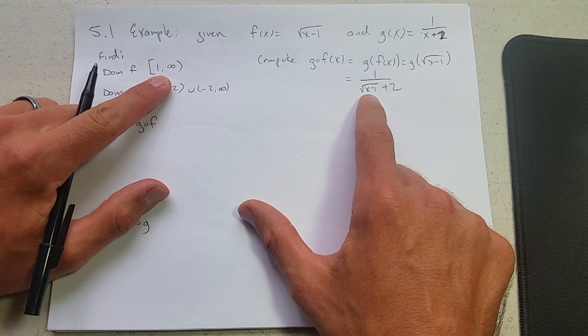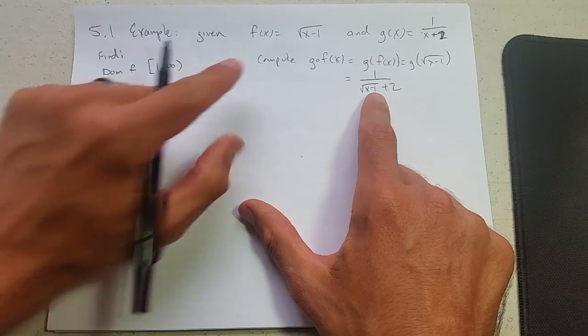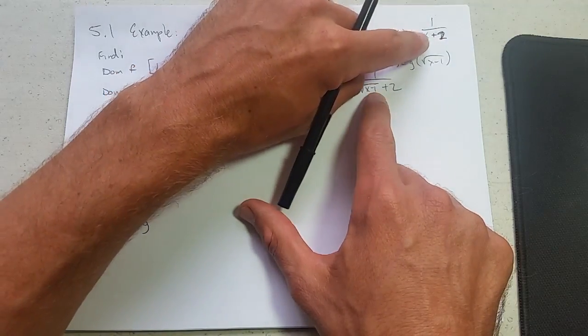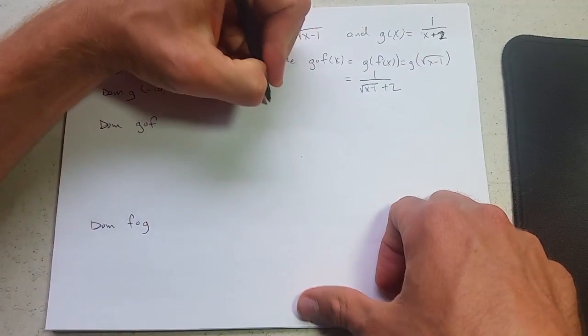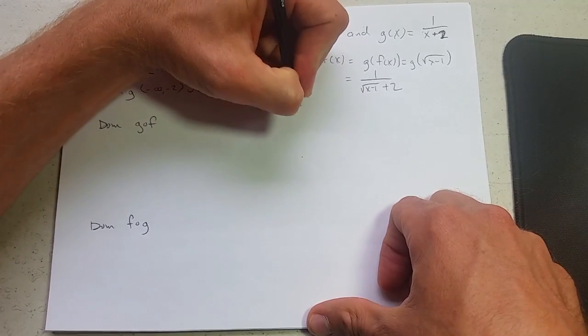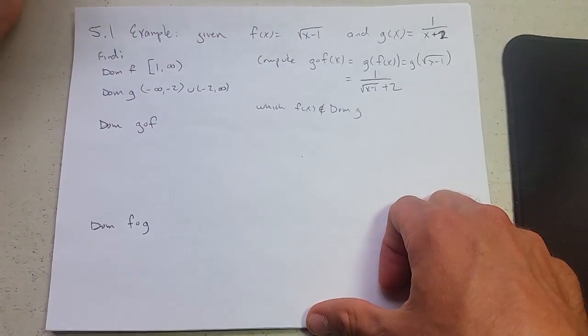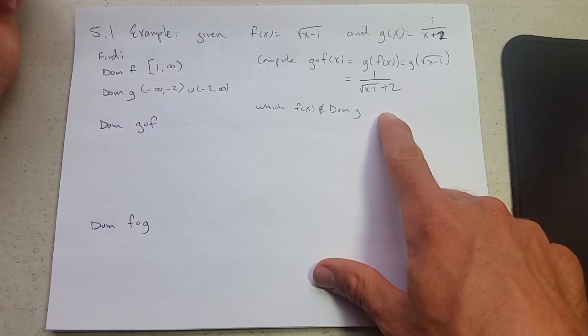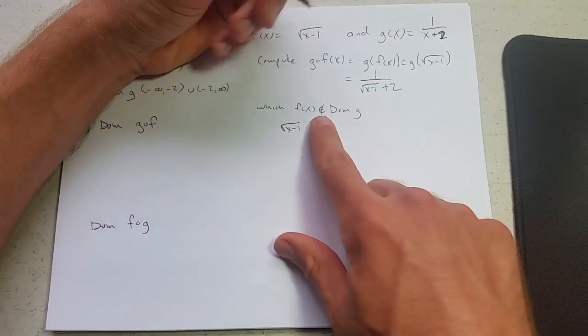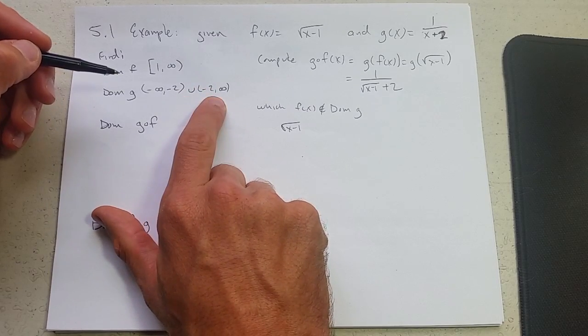Now do we have to look out for anything else? Which x values here have the property that they would make this one that would not be inside the domain of g? So what I'm going to do, which f of x values are not in domain of g. So that was right off the last page for domain of compositions. What's f of x? That's square root x minus 1. What does it mean to not be in the domain of g? Well, the good news is there's only one number not in the domain of g. It's negative 2.